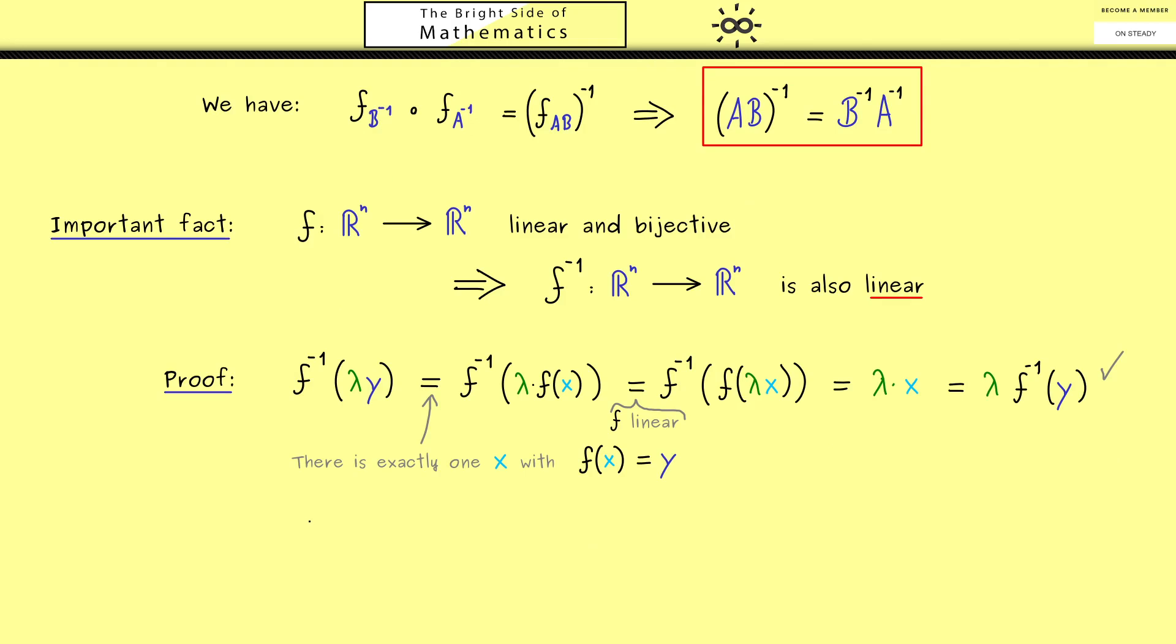Hence, now we can do a similar thing with the vector addition. This means that now we put in two different vectors y and y tilde. And then, of course, we can do the same as before. Which means we find a vector x and a vector x tilde. Hence, then we have F inverse of F of x plus F of x tilde. And now the idea is the same as before.